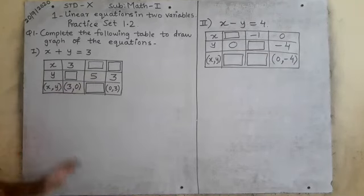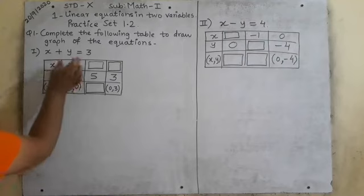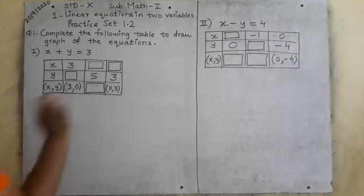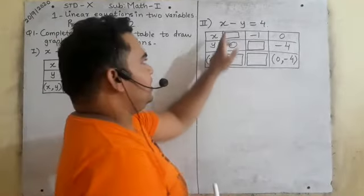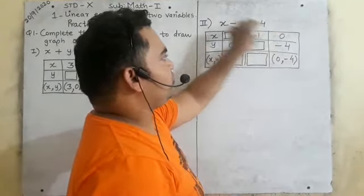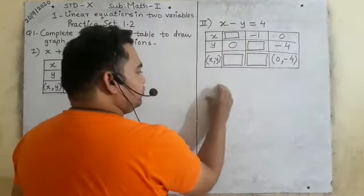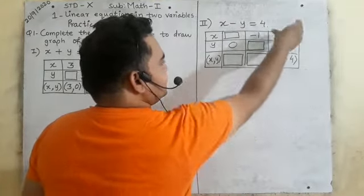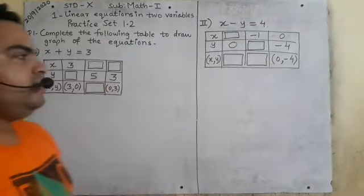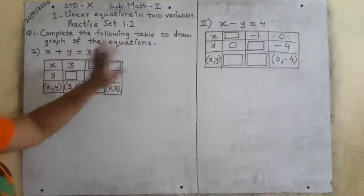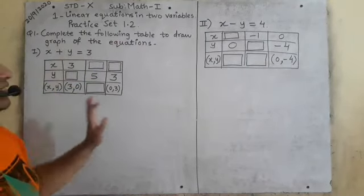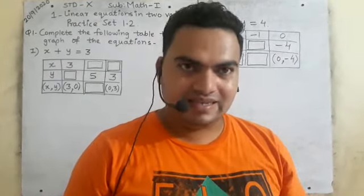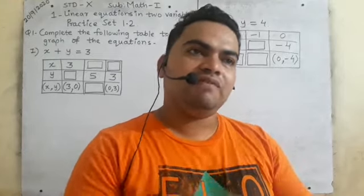Some coordinates are empty, so we have to find them one by one. This column is first, this is second, and this is third. Now here, the second equation is x minus y is equal to 4. We have to use each equation for its respective columns — vertically we have to see. In the first question, we have to only solve and fill the table. We don't have to draw the graph.